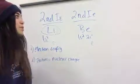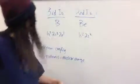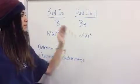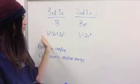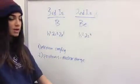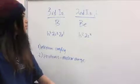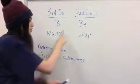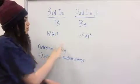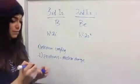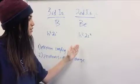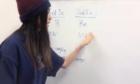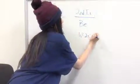Now a harder problem: comparing the third ionization energy of boron to the second ionization energy of beryllium. Boron's electron configuration is 1s² 2s² 2p¹. For the third ionization energy, we remove two electrons: 2p¹ minus one gives 2s², then minus one more gives 2s¹. For beryllium at the second ionization energy, its 1s² 2s² minus one electron leaves 1s² 2s¹.